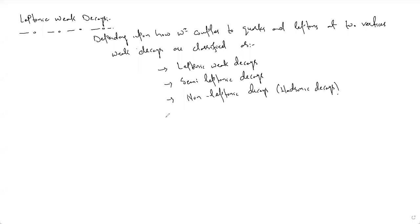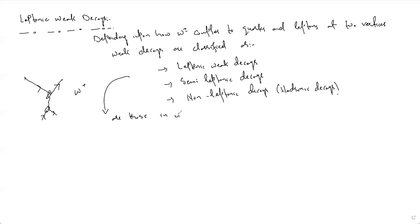Leptonic weak decays are those in which the W-plus couples to leptons at both vertices. If leptons are involved at both vertices of the Feynman diagram, we call that process a leptonic weak decay.